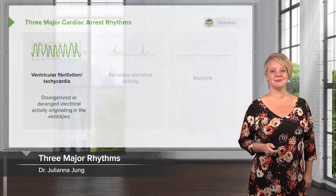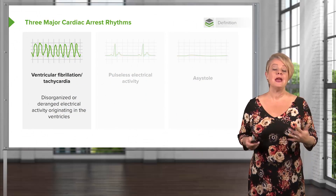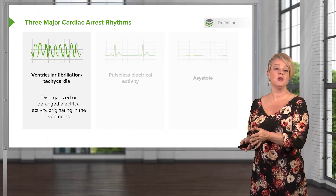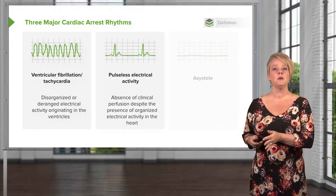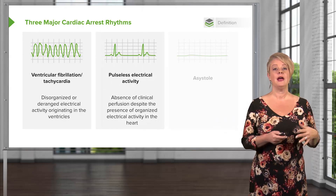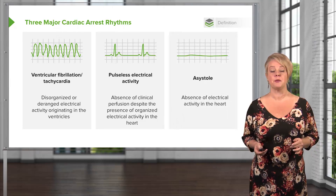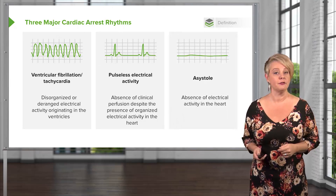Now we're going to talk about the second part of cardiac arrest, or advanced life support. There are three major cardiac arrest rhythms that we need to be aware of: ventricular fibrillation and ventricular tachycardia, pulseless electrical activity, and asystole. We're going to talk in some detail about each of those three, identifying some of the key similarities and differences between them.